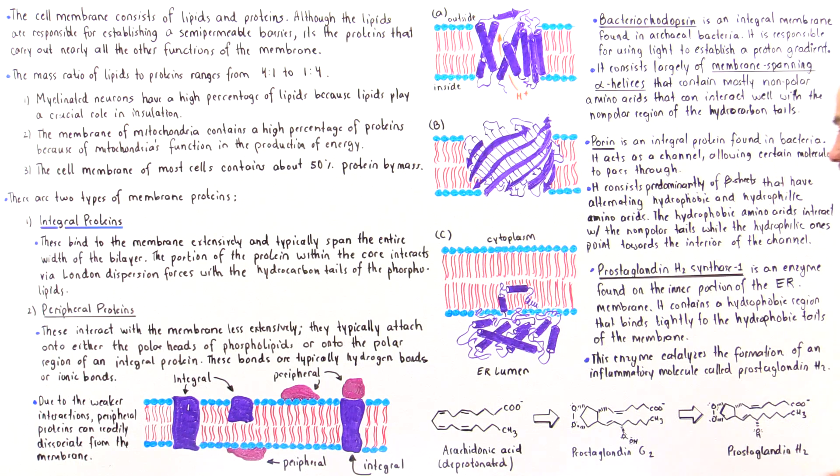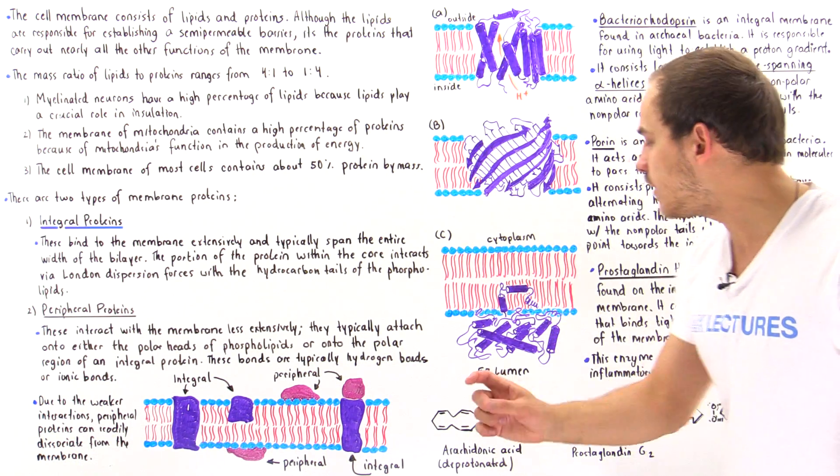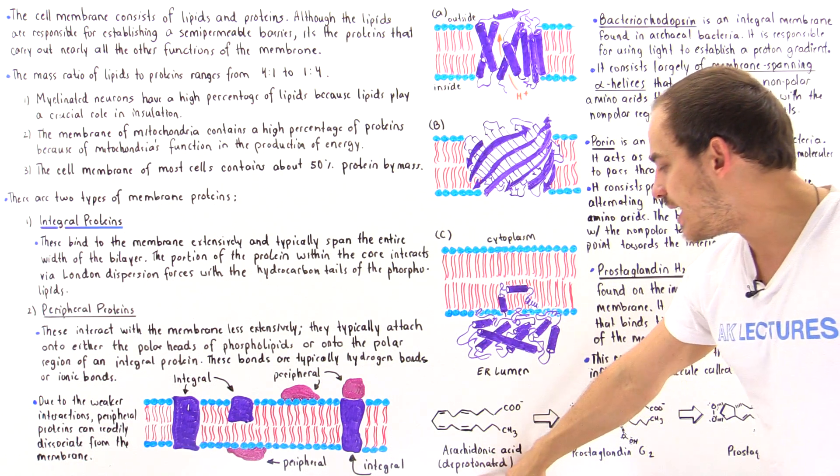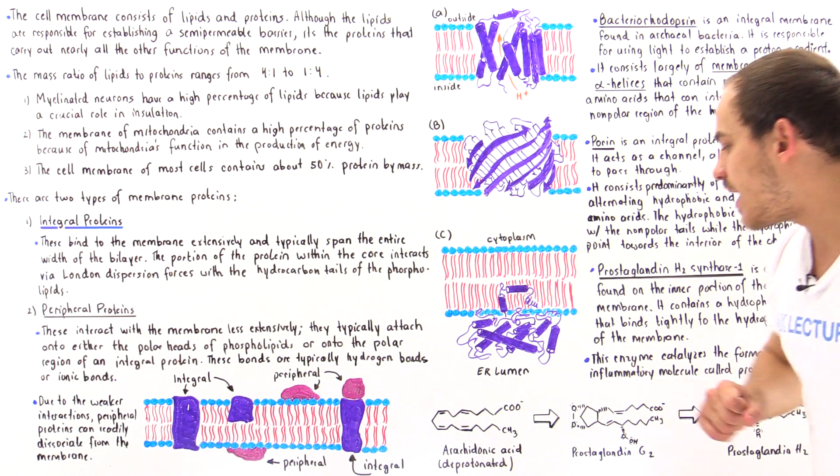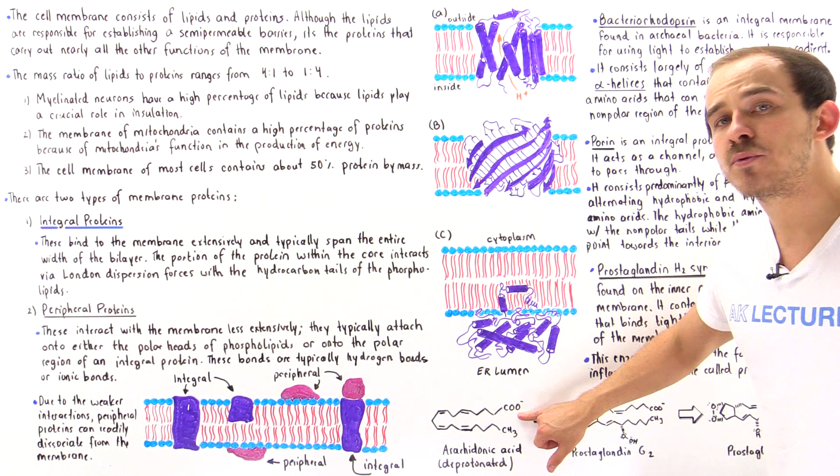So this is the two-step process that it catalyzes. The substrate molecule of this particular enzyme is arachidonic acid, and the arachidonic acid exists in its deprotonated state.